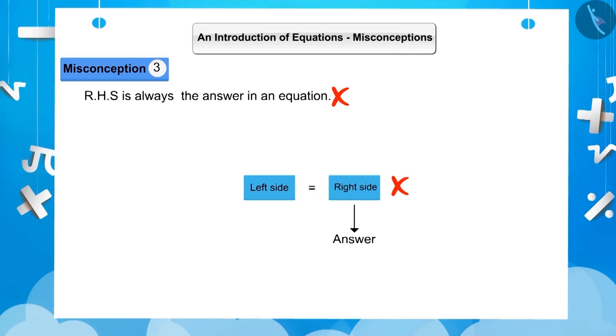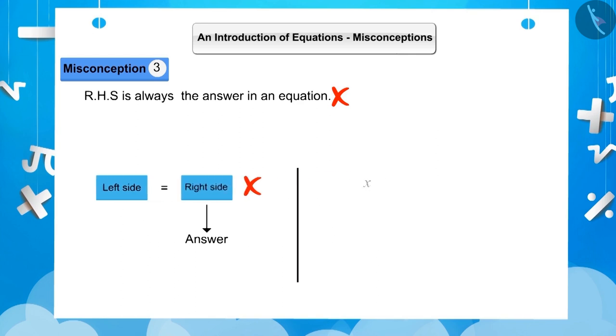An equation does not always tell us the answer. Rather, it shows the relationship between the two sides which are equal, which is actually correct. Look at this equation: x plus 5 is equal to 11. Children think that the value of x here is 11, but this is a wrong understanding.